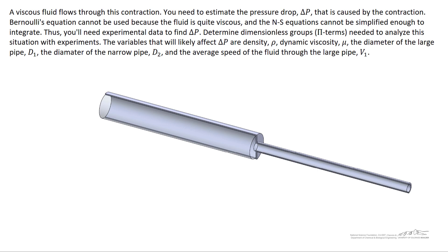We want to make this as efficient as possible, so we're going to come up with some dimensionless groups. We'll assume you have some intuition as to what variables might affect delta P. Let's say you came up with the notion that the pressure drop is going to be affected by the density, dynamic viscosity, the inner diameter of the large pipe D1, the inner diameter of the narrow pipe D2, and the average speed of the fluid through the large pipe V1.